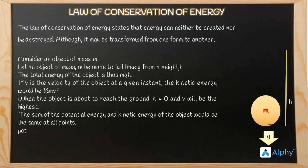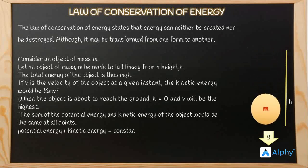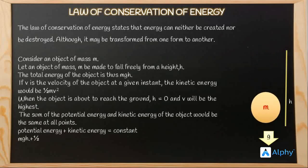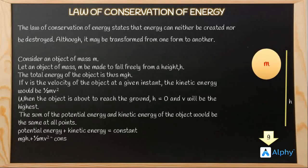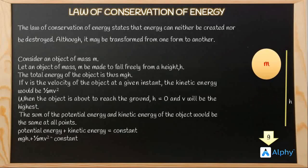However, the sum of the potential energy and kinetic energy of the object would be the same at all points. That is, potential energy plus kinetic energy equals a constant, i.e., mgh + half mv squared equals constant.